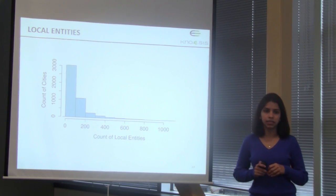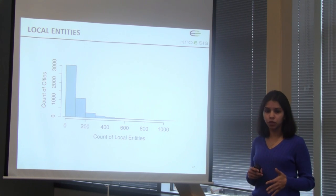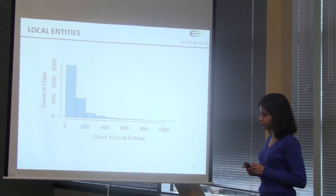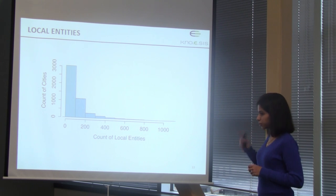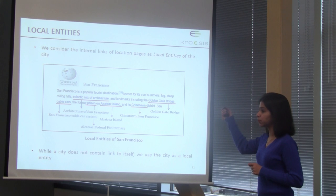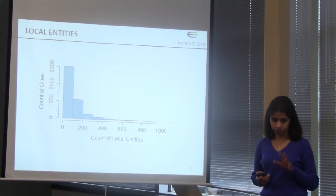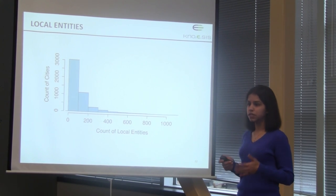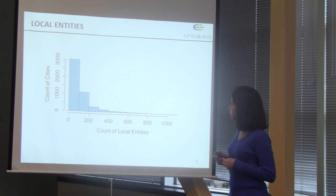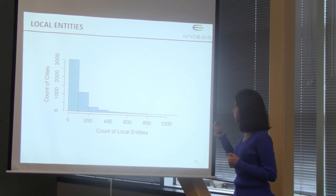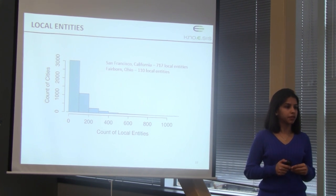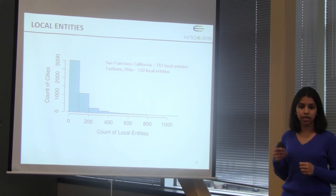This is a graph of local entities extracted from Wikipedia pages of all cities in the US with population greater than 5,000. The count of local entities ranges from 30 to 800 — for example, San Francisco has 717 local entities and the city of Fairfax, Ohio has 110. Consider the media section of San Francisco's Wikipedia page: it mentions local newspapers like San Francisco Chronicle, Examiner, SF Weekly, and national networks like CNN, BBC, MSNBC.